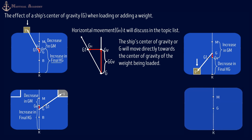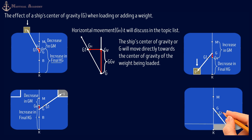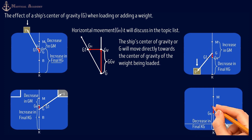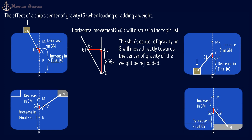The next scenario: filling in or pumping water ballast into the double bottom tank. The center of gravity of the tank is marked as a dot and labeled small g. The ship's center of gravity will move directly towards the center of gravity of the weight being loaded; the new G is marked G1 after pumping in ballast water, and the vertical shift is marked Gv. The effect will be a decrease in KG and an increase in the initial metacentric height GM. To find the KG or VCG of the liquid inside the tank, refer to the ship's sounding table.